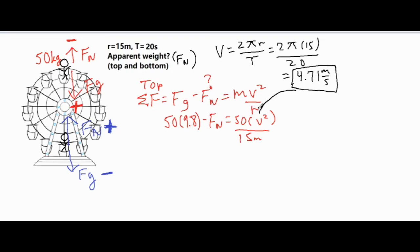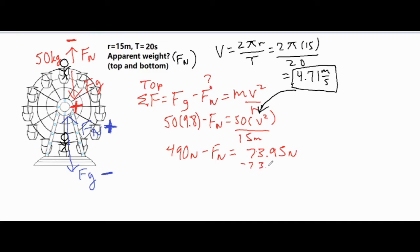We plug 4.71 m/s into the formula for v², multiply by 50, and divide by 15, giving us 73.95 newtons for mv²/r. We have 50 × 9.8 = 490 newtons minus the normal force equals 73.95. Subtracting 73.95 from 490, we get a normal force — the apparent weight at the top — of 416.05 newtons.